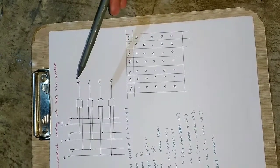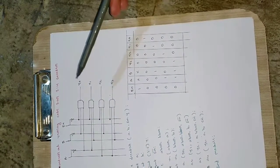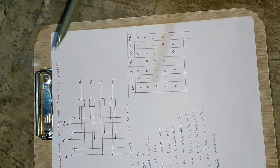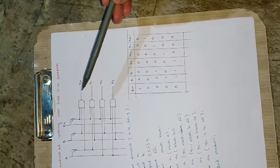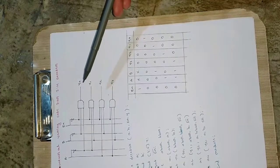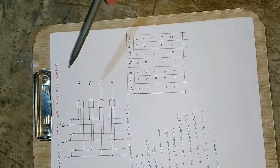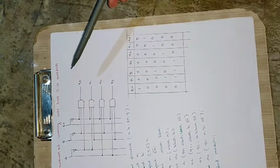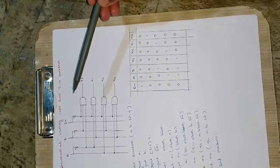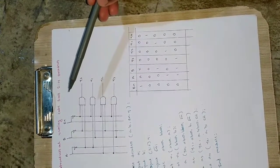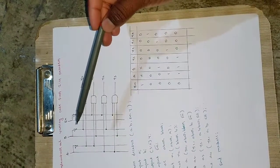The 2-to-4 decoder has two inputs and four outputs — that's why it is called a 2-to-4 decoder. It also has an enable pin. Depending on the value of the enable pin, it will be in the off or on state. If enable is 0, the decoder is operational; if enable is 1, it will be in the off state. So it is basically an active-low enable.